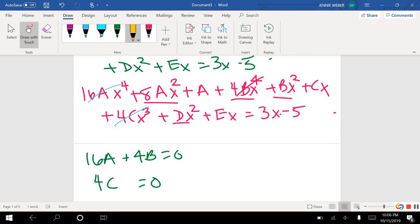Now let's try this again with the x squared. So then I have 8A plus B plus D equals 0 as well.